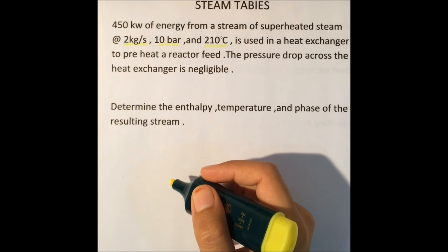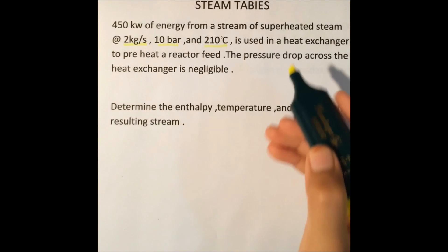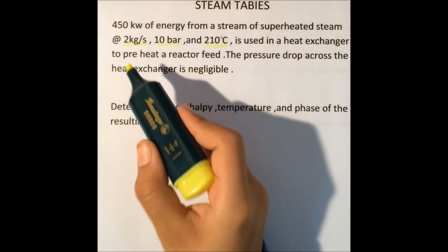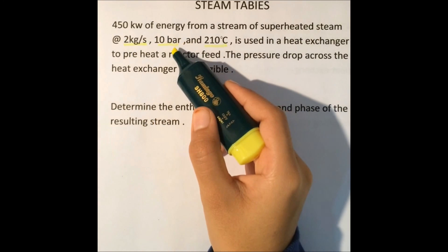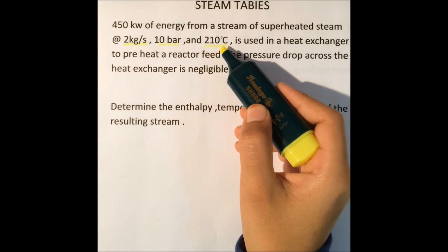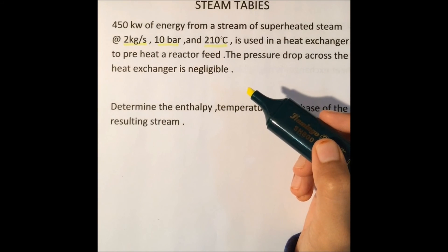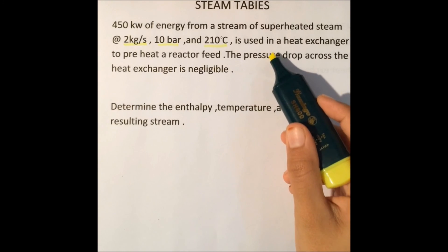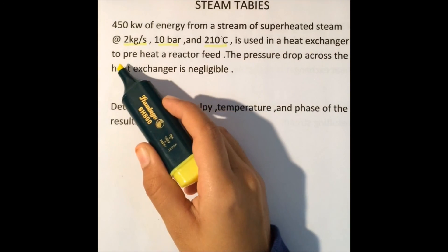This example problem shows how we can use the steam tables to calculate the enthalpy and composition of a partially condensed stream. In this problem, you have been given a stream of superheated steam at 2 kg per second, 10 bar, and 210 degrees Celsius. Energy from this stream is used in a heat exchanger to preheat a reactor feed.